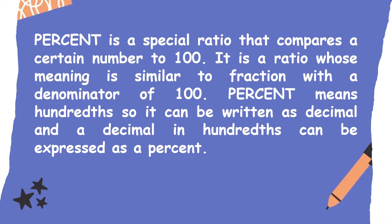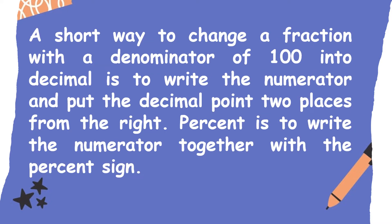Percent is a ratio that compares a certain number to 100. It is a ratio whose meaning is similar to a fraction with a denominator of 100. Percent means hundredths, so it can be written as a decimal. A decimal in hundredths can be expressed as a percent. A short way to change a fraction with a denominator of 100 into a decimal is to write the numerator and put the decimal point two places from the right. For percent, write the numerator together with the percent sign.